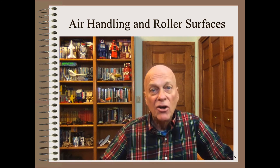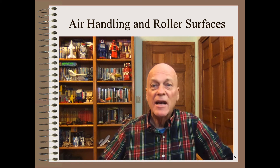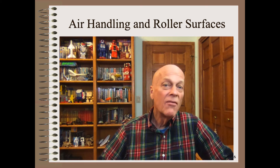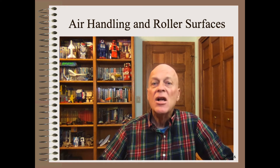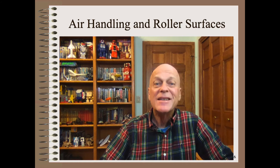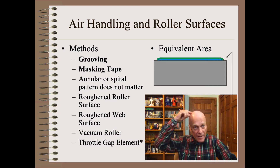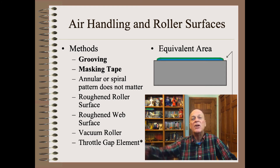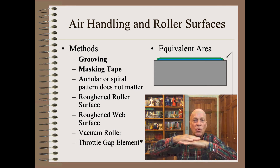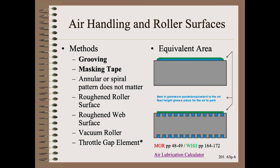To counter air entrainment, you must have sufficient air handling, such as provided by rough roller surfaces. The most common rough roller surface is grooving. For decades, we have known how to calculate the hair's thickness of air between a web and a smooth roller and use that to provide an equivalent area to park the air. This heuristic is detailed in my Mechanics of Rollers book and in the Web Handling Handbook and in the Air Lubrication Calculator by Avid App.